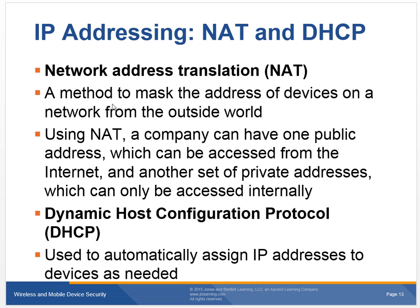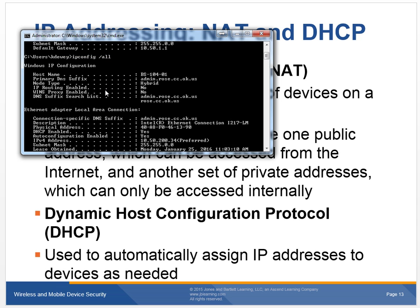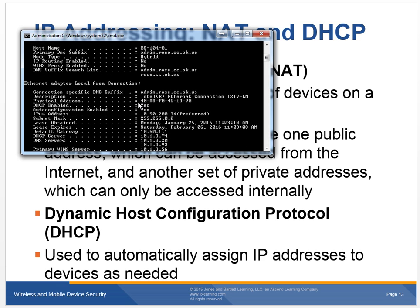How are these addresses assigned? That's DHCP — Dynamic Host Configuration Protocol. If I type ipconfig /all, you will see DHCP is enabled. That means the server is automatically assigning this address to me. I have a reservation, so no matter what, I'm going to get the same number — it's based on my MAC address, which is my physical address. I got my address automatically from the server, and I can see that 10.1.3.74 is actually my DHCP server.